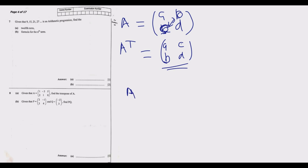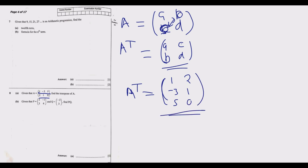For the given matrix A, the transpose Aᵀ is found by making the rows become columns and the columns become rows. So for the given matrix with entries a1, a3, a5 in the first row and a2, a1, a0 in the second row, you rearrange accordingly. This is how you find the transpose.